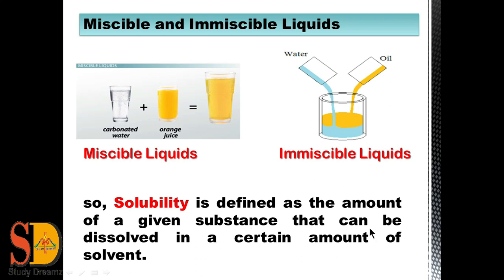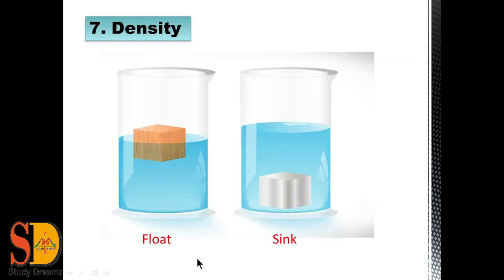The seventh property is density — density means how dense a material is. Based on density, materials are divided into two categories: floating and sinking. A material with density lower than that of water floats on it, while a material with higher density than water sinks. As you can see in this picture, a wooden cork floats in water, while a piece of iron sinks completely to the bottom.